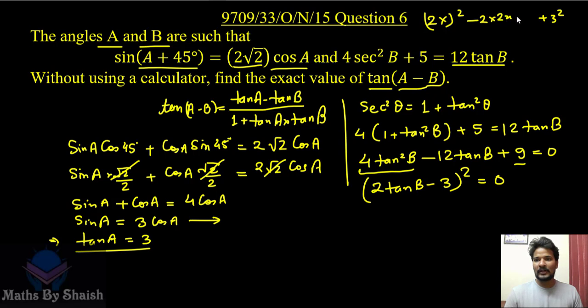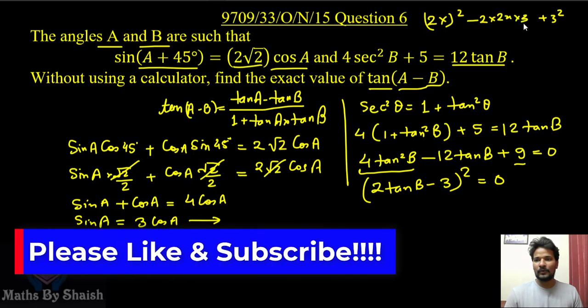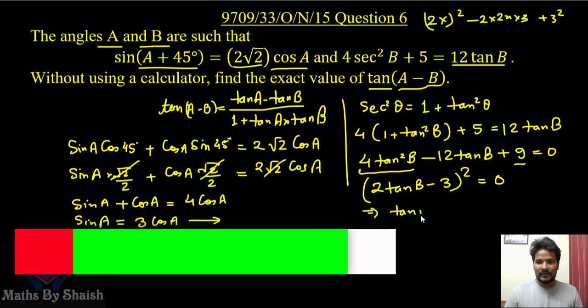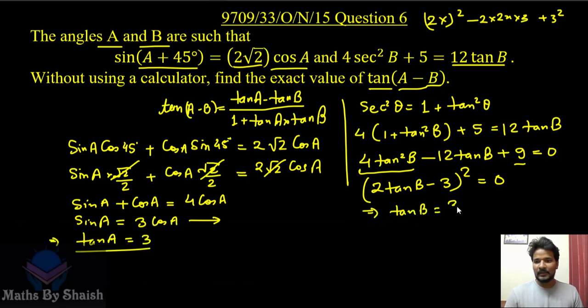2 times 2 tan B into 3, 2 times 2 is 4, 3 times 4 is 12. So we got the same thing. From here we solve and we get tan B as 3/2. Both roots are the same, 3/2. So tan B is 3/2.